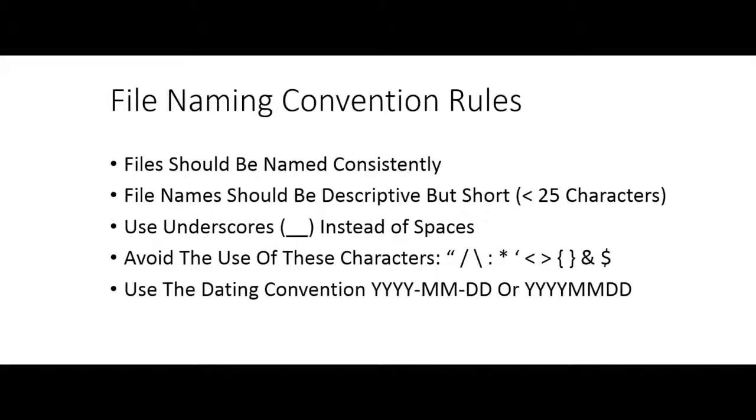My last recommendation is if you're using dates in file names, follow the dating convention ISO 8601. It's wonderful for file naming conventions. It uses a four-digit year, a two-digit month, and a two-digit day. When you use that date system, your dates become consistent. Moreover, if you put that date system at the beginning of your file names, your files will sort chronologically. I highly recommend using ISO 8601 — put those dates at the beginning and you have a great way to sort your information.